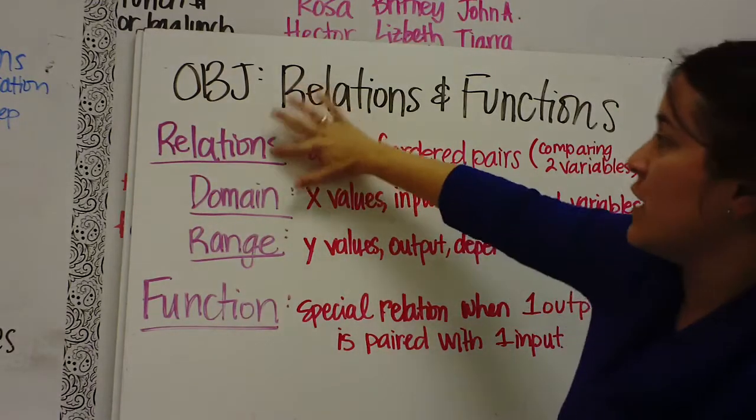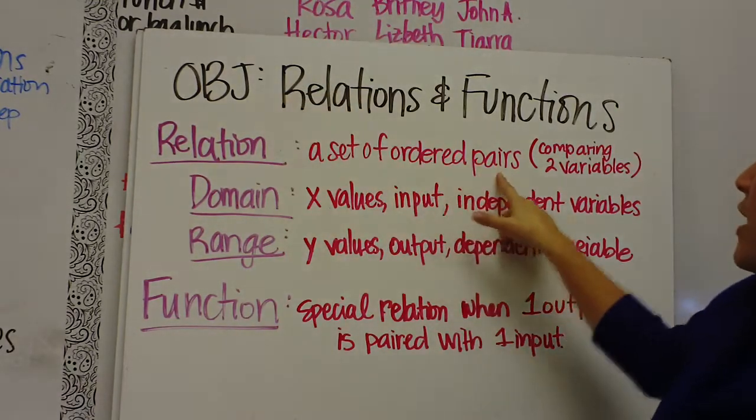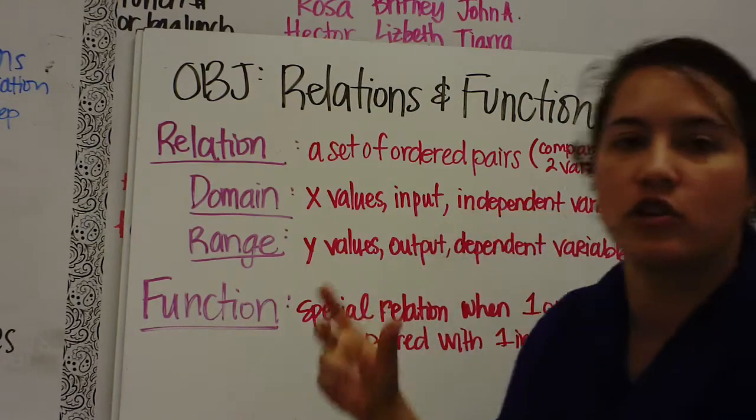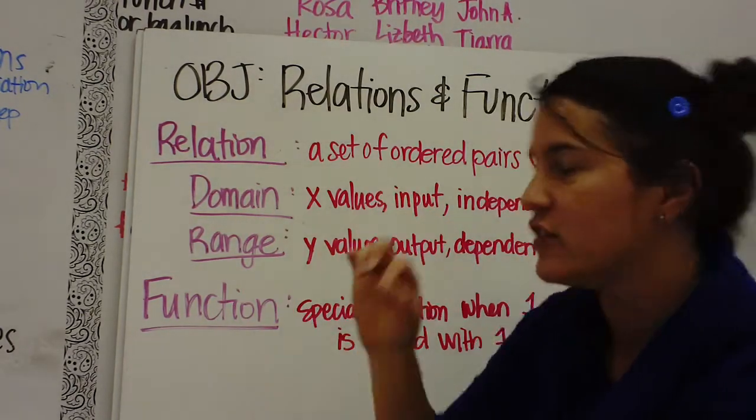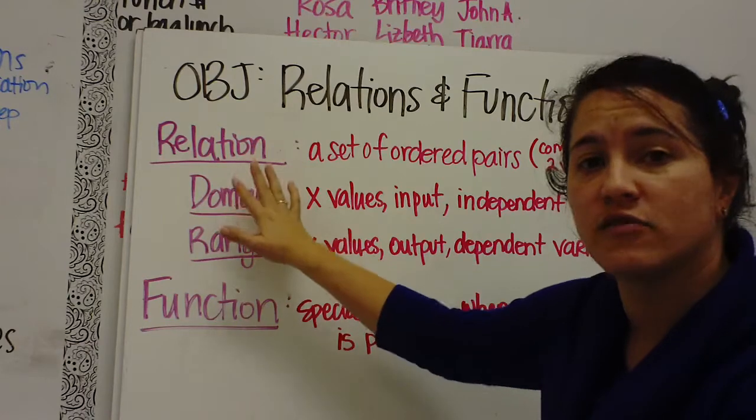So here's the vocabulary. Relations, or relation, a set of ordered pairs comparing two variables. You know an ordered pair is an X comma Y, you know we graph. So any ordered pairs is a relation.